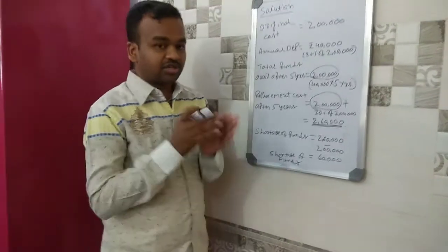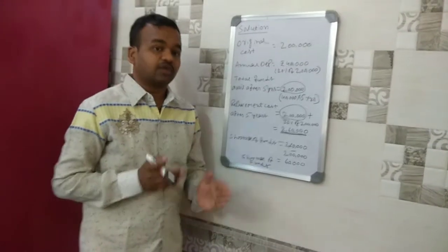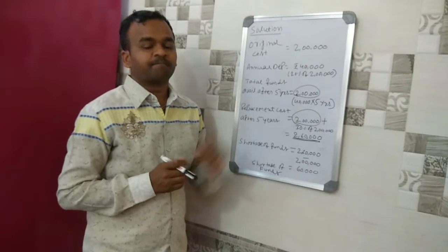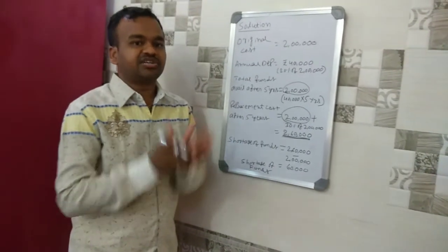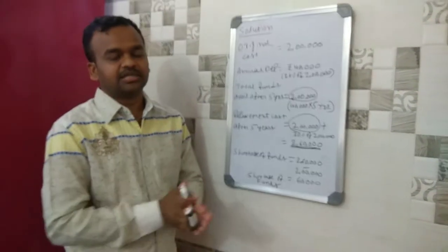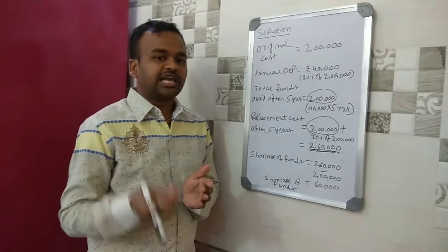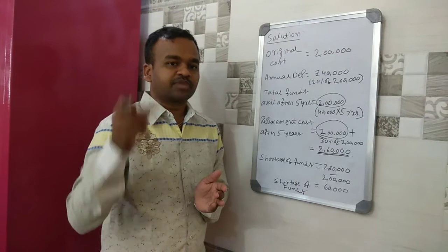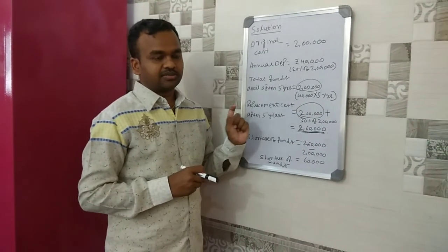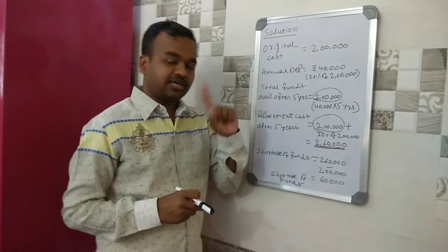This shortage of Rs. 60,000 demonstrates that under the historical accounting method, we do not have sufficient funds to replace the machinery. That is why there is a necessity to introduce inflation accounting — current cost accounting — in place of historical accounting.